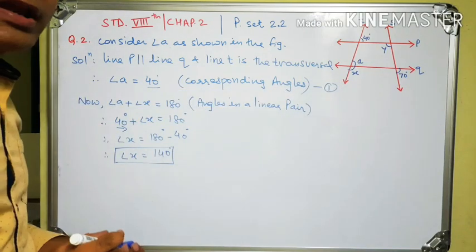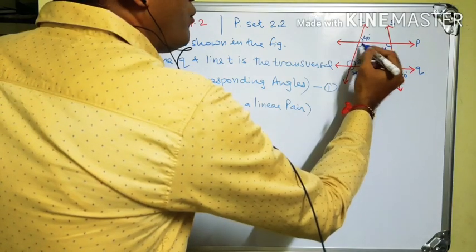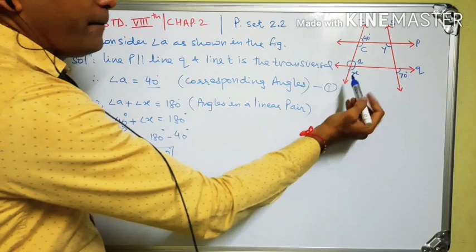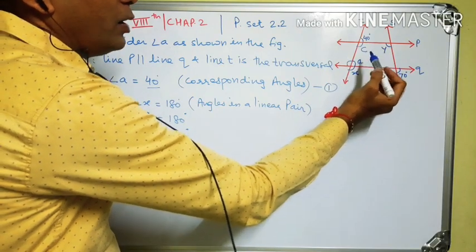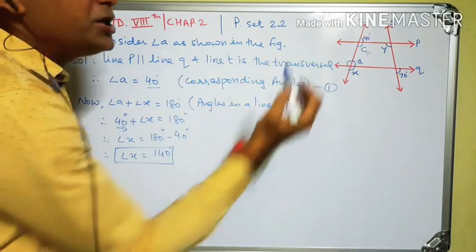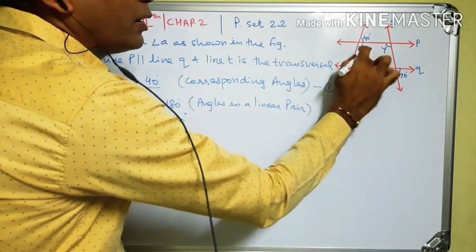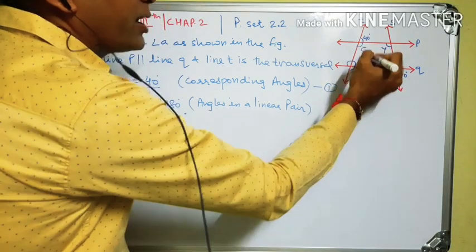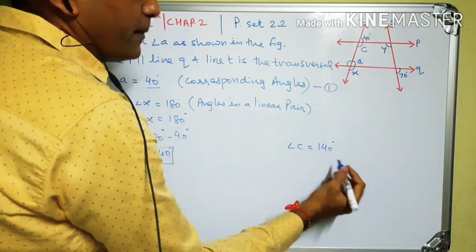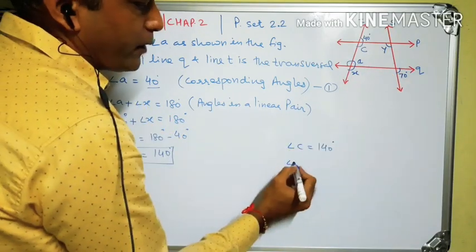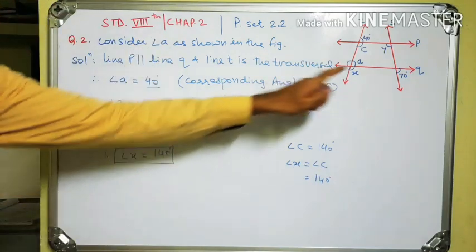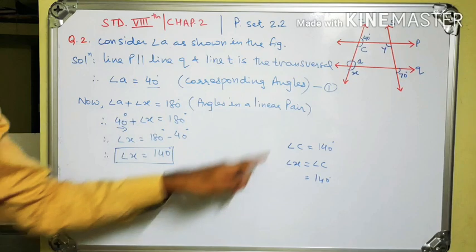There is another method: consider angle C instead. Angle C and 40 degrees are angles in a linear pair, so angle C equals 180 minus 40 equals 140 degrees. Angle C and angle X are corresponding angles and therefore congruent, so angle X equals 140 degrees. Both methods give the same answer.